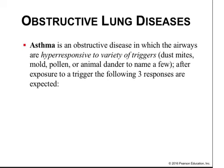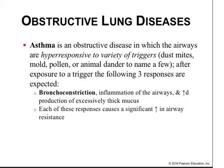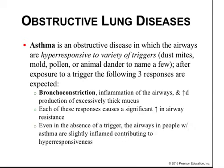Asthma is an obstructive disease which triggers the airways to become hyperresponsive to components in the inhaled air, including dust mites, mold, and pollen. After exposure to a trigger, three responses occur: bronchoconstriction, inflammation of the airways, and increased production of excessively thick mucus. Each of these responses causes a significant increase in airway resistance. Even in the absence of a trigger, the airway in people with asthma is inflamed and contributes to hyperresponsiveness.